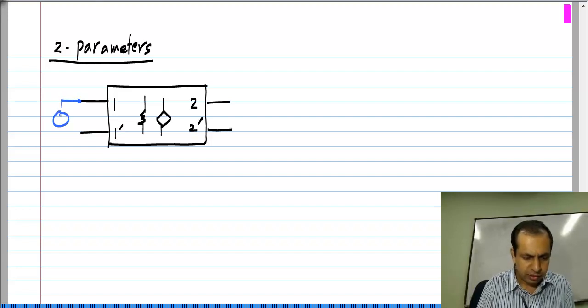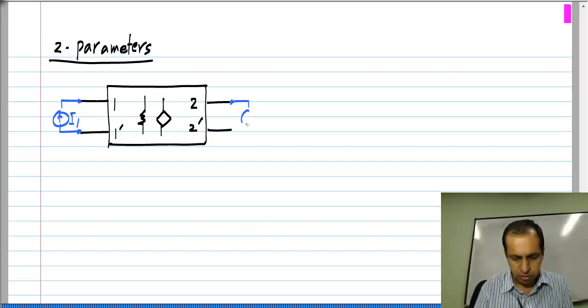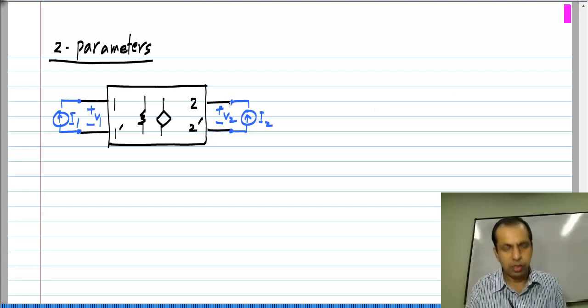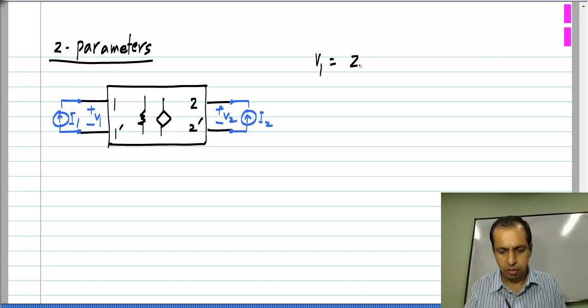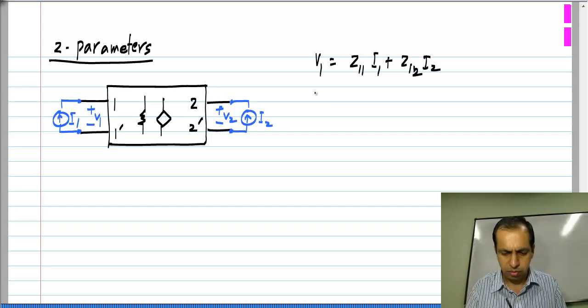So, we think of currents as independent variables. You apply I1 and I2 and you measure V1 and V2. And of course, V1 and V2 will be linear combination of the two independent sources which are in the circuit. V1 will be Z11·I1 plus Z12·I2, V2 will be Z21·I1 plus Z22·I2.